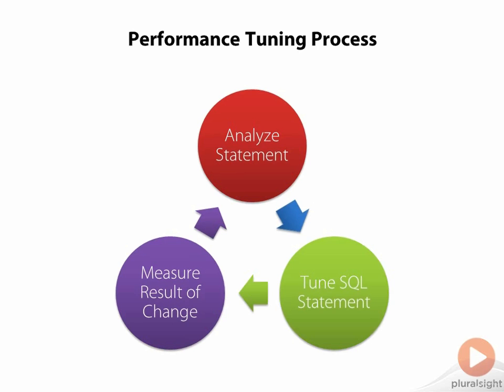Then we execute our statement again and measure the impact of the change that we made. This allows us to judge how effective our change was and if there's more that we should do, or if this change is good enough. You keep iterating in this fashion. Sometimes a change will have no impact — you may add an index, but for some reason Oracle doesn't use the index. So then you head back to the drawing board, reanalyze your statement, and maybe come up with a different index that you can use.